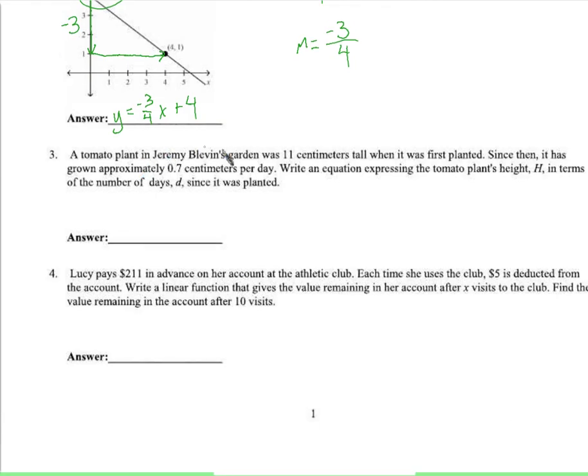Okay, a tomato plant in Jeremy Blevins Garden is 11 centimeters tall when it starts. It has grown 7 centimeters per day. We're in an equation that expresses the height h in terms of the number of days since it was planted. So basically it's saying given d, I should be able to calculate h. Given the number of days since it was planted, I should be able to find the height. Remember I said that we even have an intuitive understanding of how to figure out how tall this plant is. Let's just say it's been 5 days.